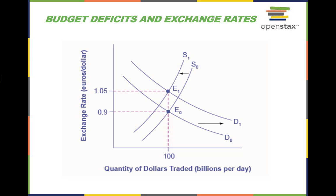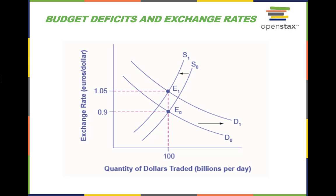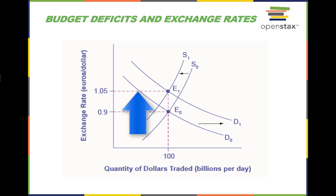Imagine that the U.S. government increases its borrowing and the funds come from European financial investors. To purchase U.S. government bonds, these European investors will need to demand more U.S. dollars, because you can only buy U.S. government bonds with U.S. dollars. They will demand U.S. dollars on the foreign exchange markets, causing the demand to shift to the right from D0 to D1. European investors will also be less likely to supply U.S. dollars to foreign exchange markets, causing the supply to shift from S0 to S1. The equilibrium exchange rate strengthens from 0.9 euros per dollar at E0 to 1.05 euros per dollar at E1. This can all stem from deficit spending and the connected need for financial capital to fund the deficit.